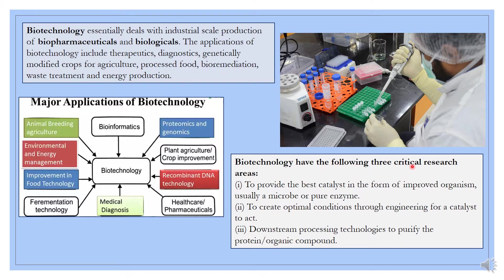Biotechnology has three critical research areas where work is massively going on. The first is to provide the best catalyst in the form of improved organisms using a microbe or pure enzyme. When developing recombinant DNA, several steps are involved. We need to know which type of bacteria to take, what plasmids that bacteria contains, and into which host we can transfer them. This is one of the major areas of research in biotechnology.